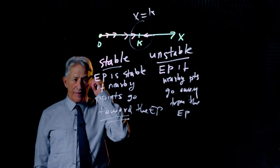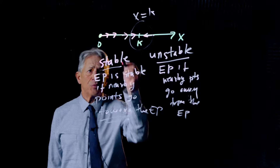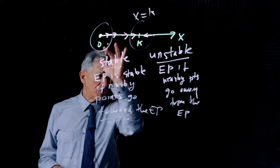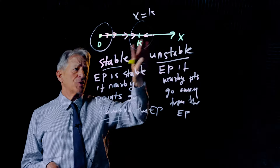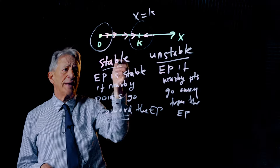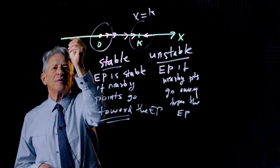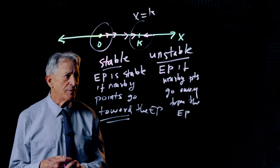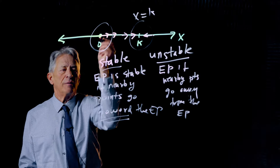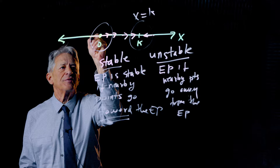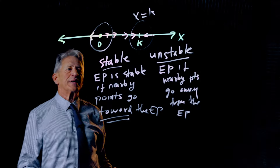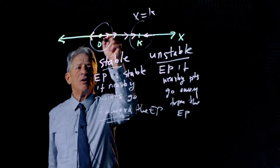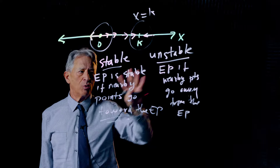The example of an unstable equilibrium point is x = 0. We're thinking of these as populations, so we're only using non-negative values of x. But if we plug negative values of x into the vector field, we see that this is a perfect example of an unstable equilibrium point.